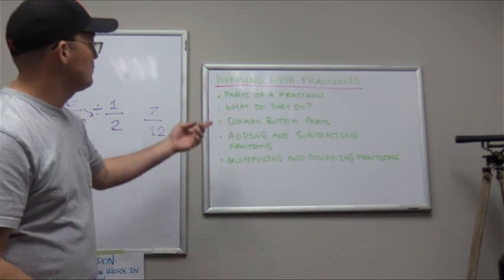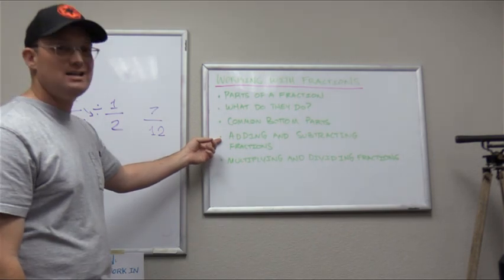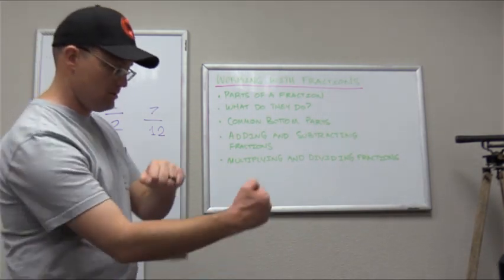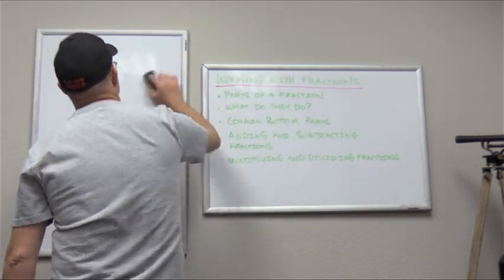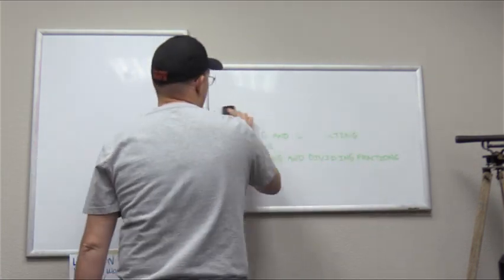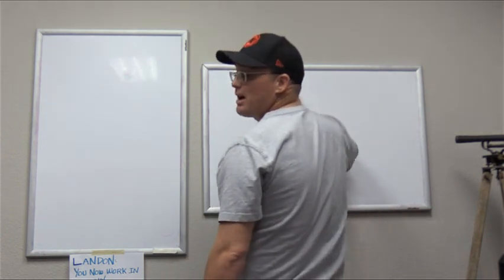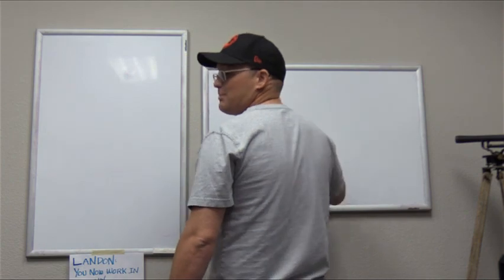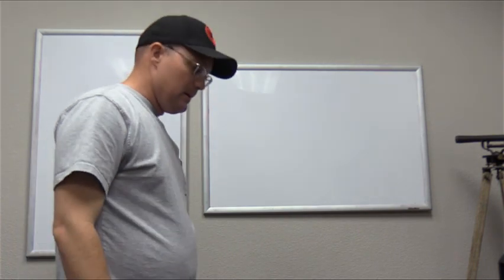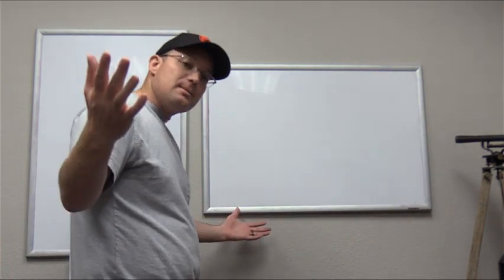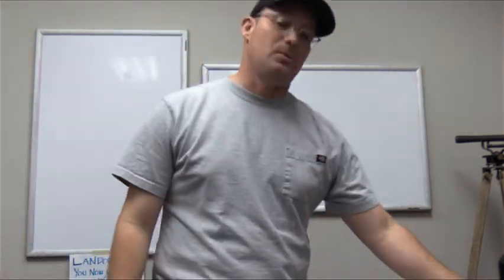Look at everything we learned in just a few minutes: the parts of a fraction, what fractions do, common bottom parts or common denominators, adding and subtracting fractions, and multiplying and dividing fractions. We'll do another video in a week or two about improper fractions and simplifying fractions. If you've got a trick for simplifying fractions, put it in the comments and I'll definitely look at that. In the next video, we're going to talk about number lines and coordinate grids — we're starting to get close to some surveying stuff.